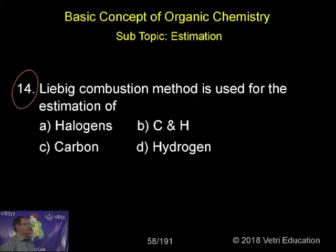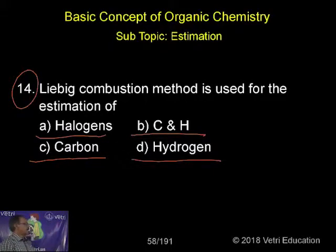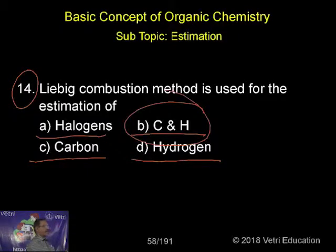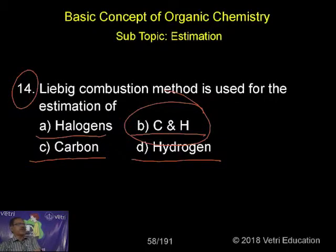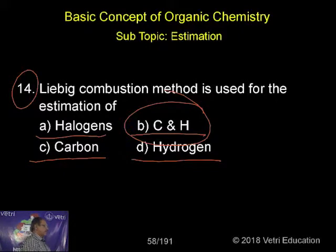The next question: which combustion method is used for the estimation of halogens, carbon and hydrogen, carbon, or hydrogen? Liebig's combustion method is specially used for the estimation of carbon and hydrogen. When we are heating with copper oxide, carbon present will be converted into carbon dioxide, and hydrogen present will be converted into water. From the amount of carbon dioxide and water formed, we can estimate the percentage of carbon and hydrogen. This method is called Liebig's combustion method.